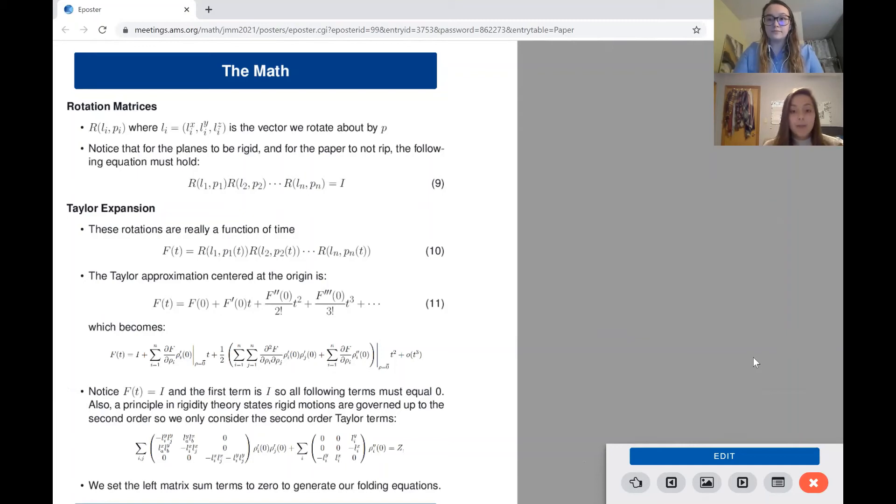Now, if I rotate each of my planes along each of their adjacent vectors, I'm equivalently multiplying their individual rotation matrices, which, if my paper does not rip, should equal the identity matrix, as we see in this section here.